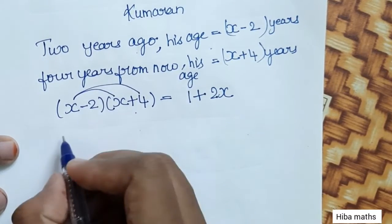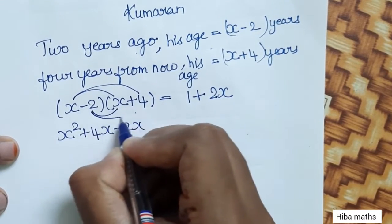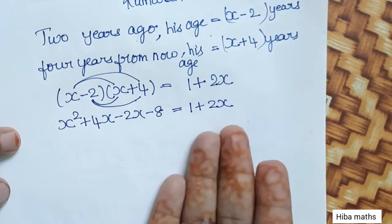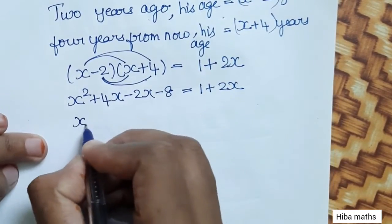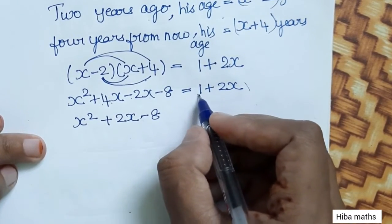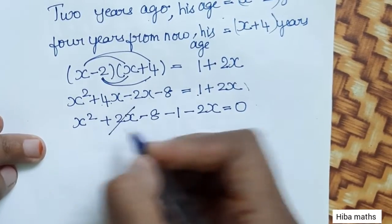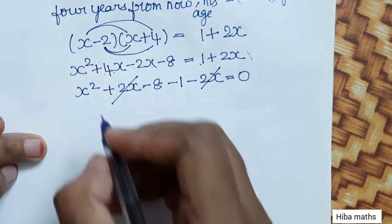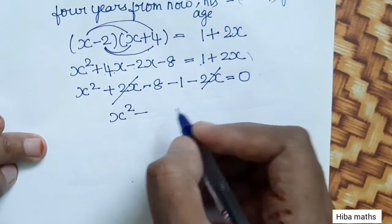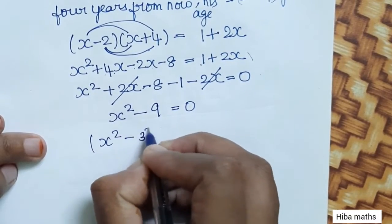Expanding: x squared plus 4x minus 2x minus 8 is equal to 1 plus 2x. Simplifying, we get x squared minus 9 is equal to 0.